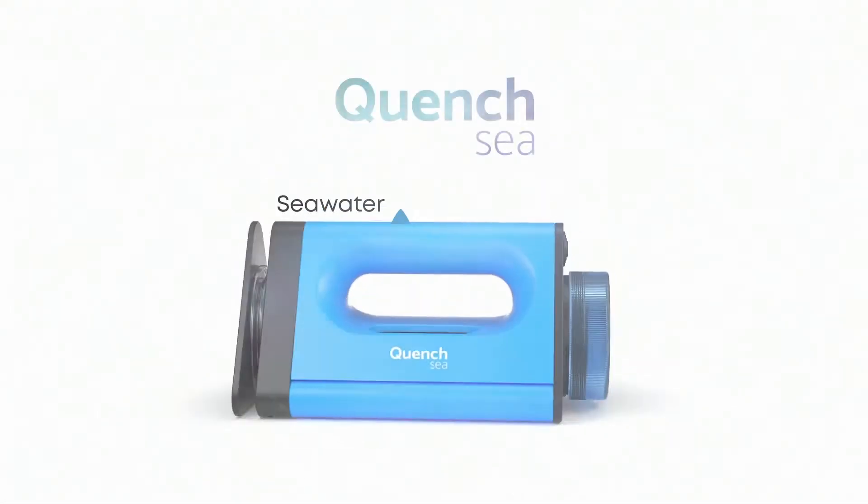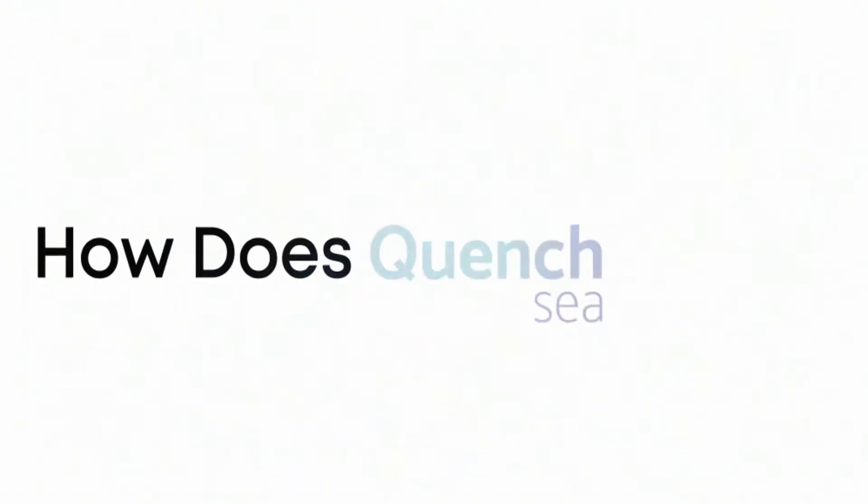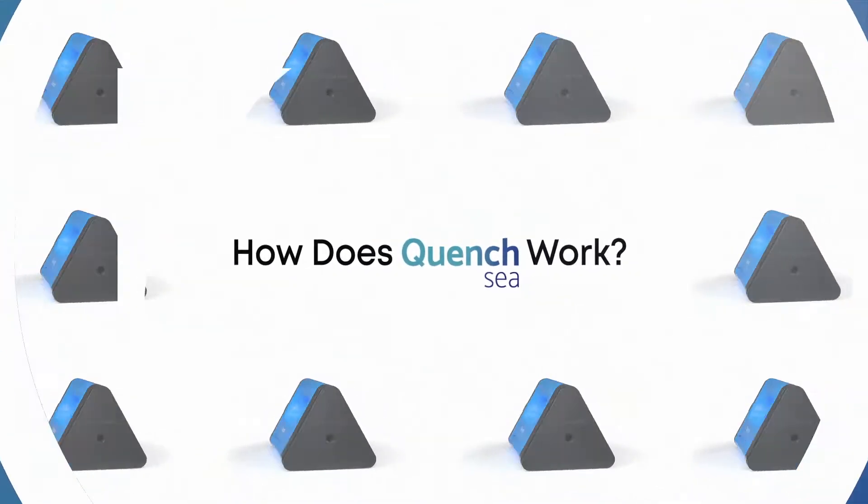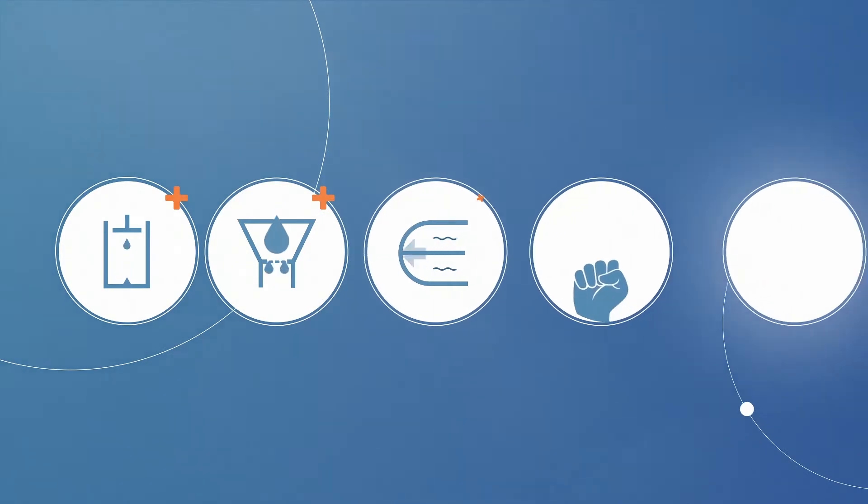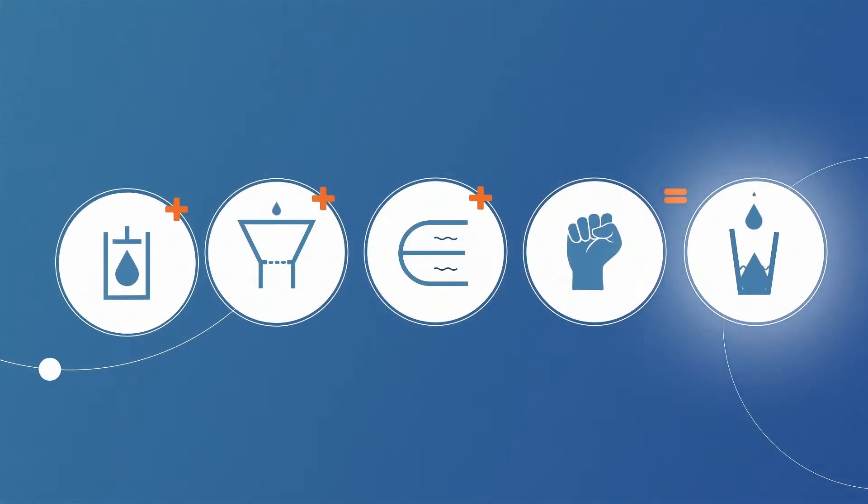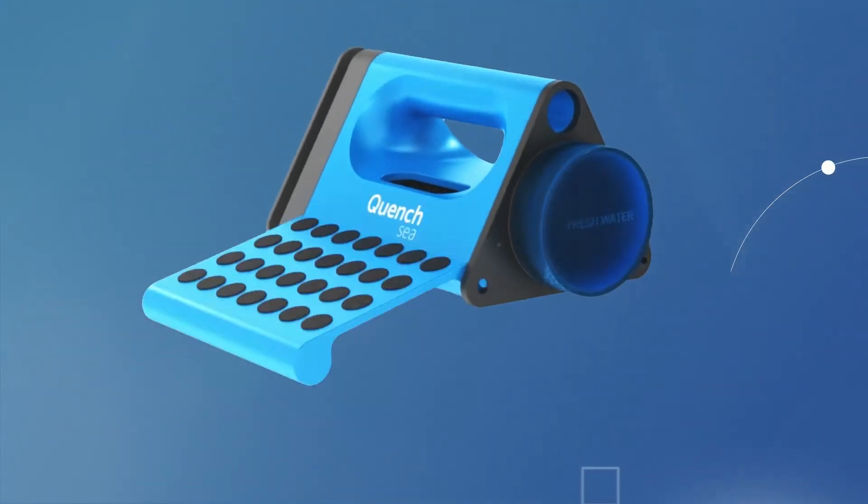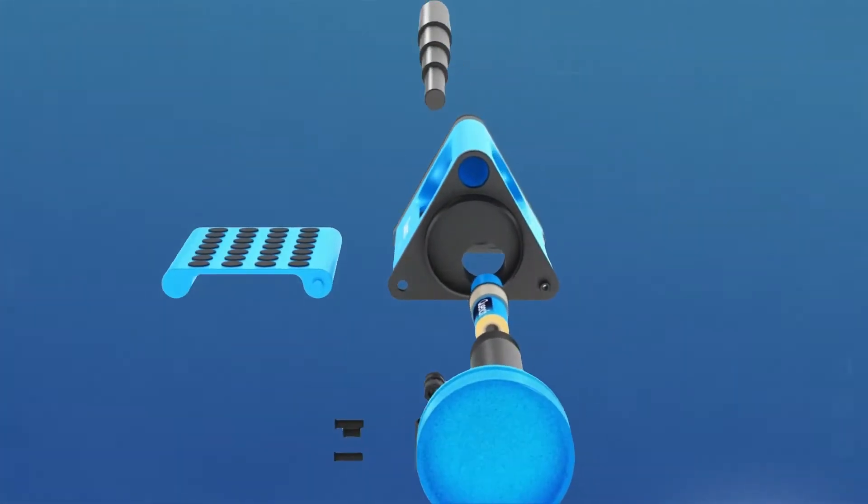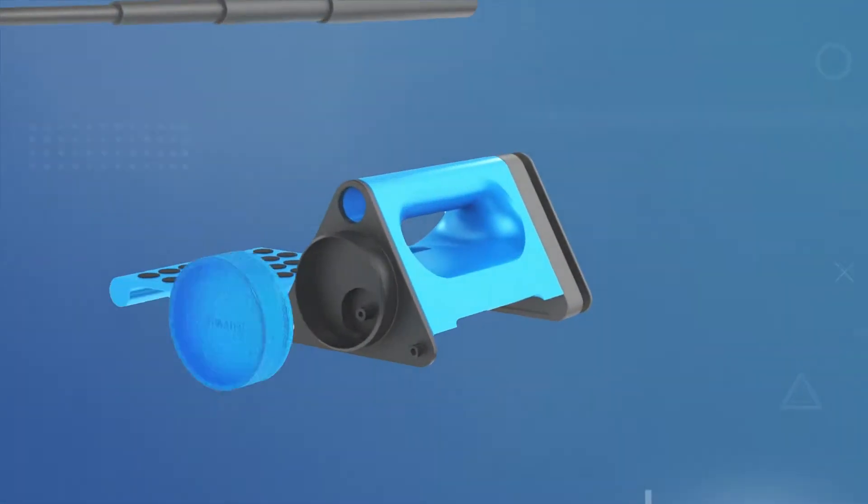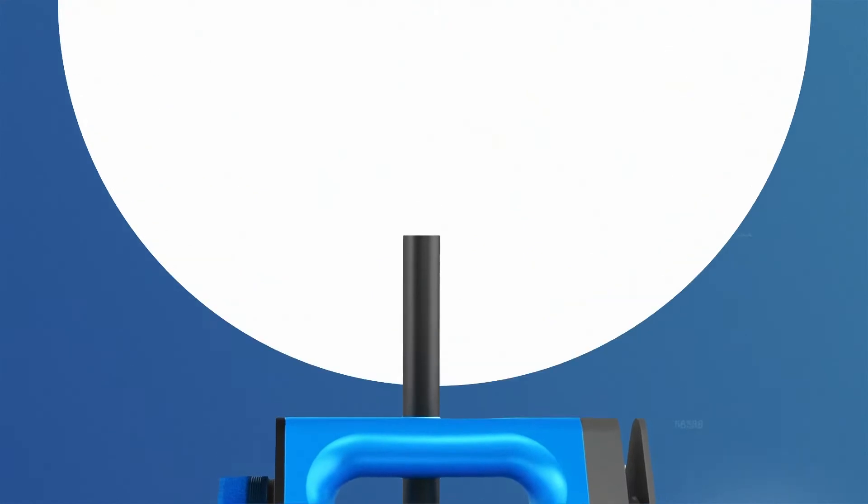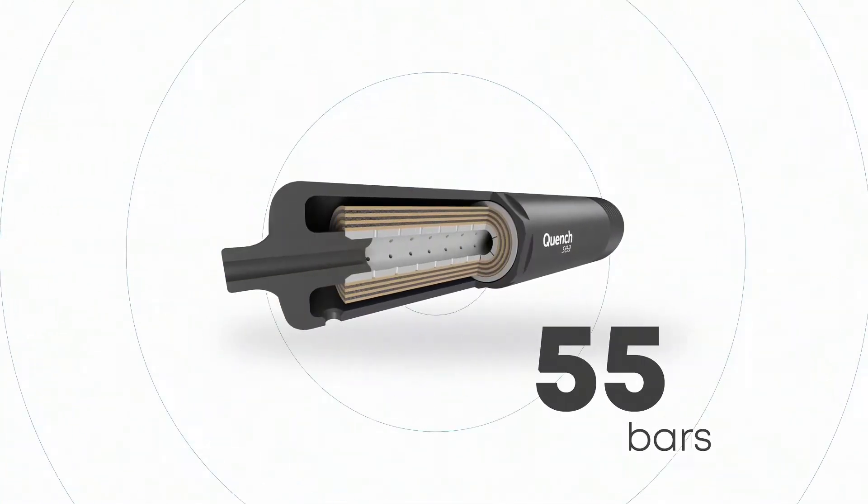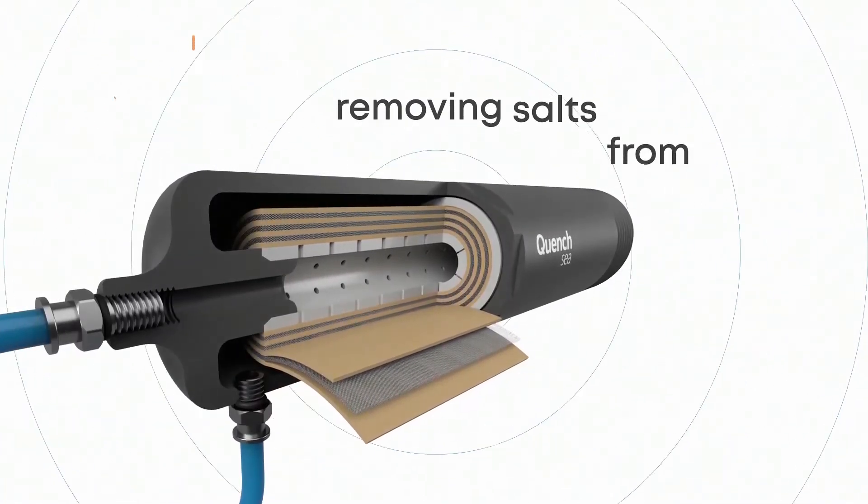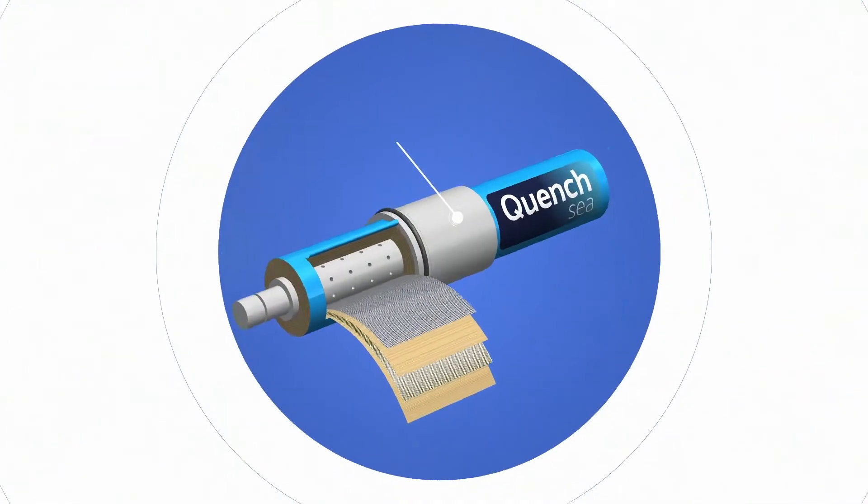QuenchSea: seawater to freshwater. How does QuenchSea work? QuenchSea is an innovative seawater desalination device that combines a hydraulic system, triple pre-filtration process, and a small reverse osmosis membrane to desalinate seawater into freshwater using human power. Its internal hydraulic system builds pressure to the required 55 bars for the reverse osmosis process to begin removing salts from water.